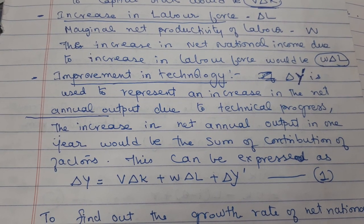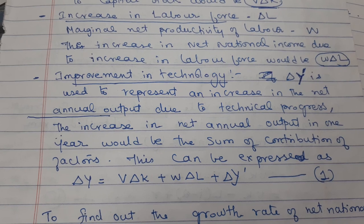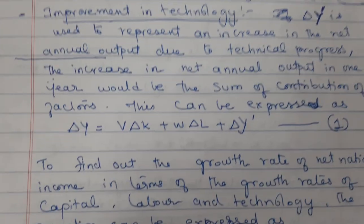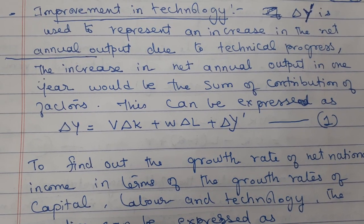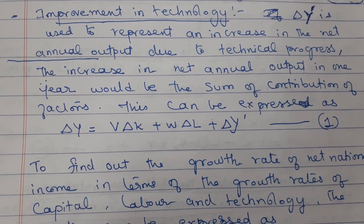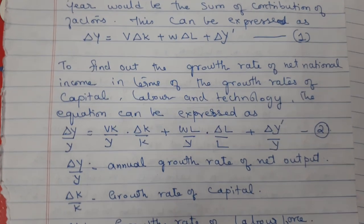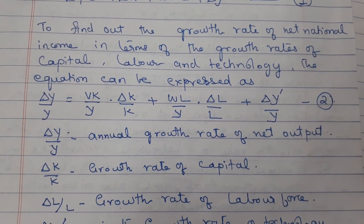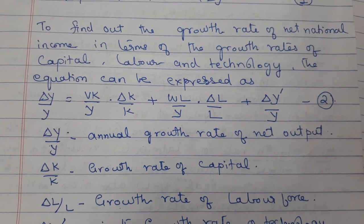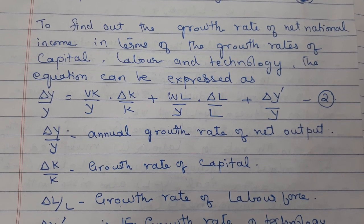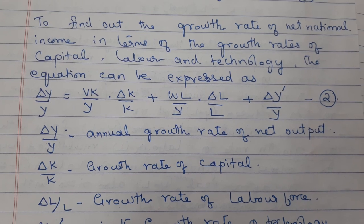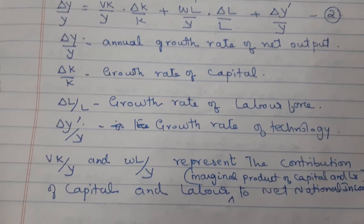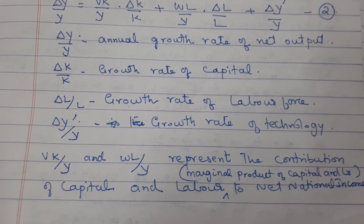Improvement in technology is represented by ΔY', which represents an increase in the net annual output due to technical progress. The increase in net annual output in one year is the sum of the contribution of all factors, expressed as: ΔY = V·ΔK + W·ΔL + ΔY'. To find the growth rate of net national income in terms of growth rates of capital, labour, and technology, the equation is expressed as: ΔY/Y = (VK/Y)·(ΔK/K) + (WL/Y)·(ΔL/L) + ΔY'/Y.